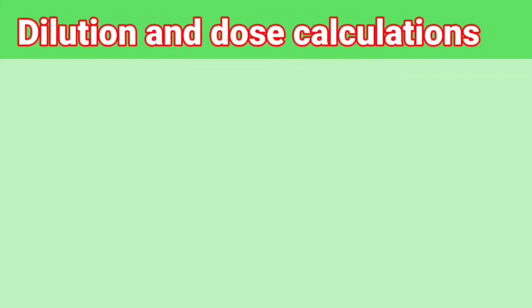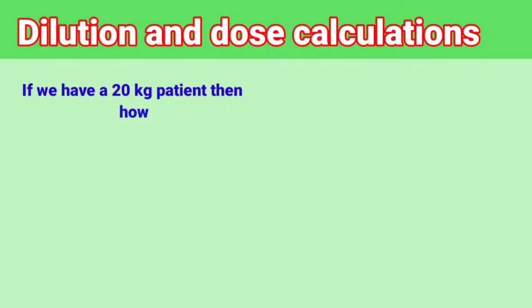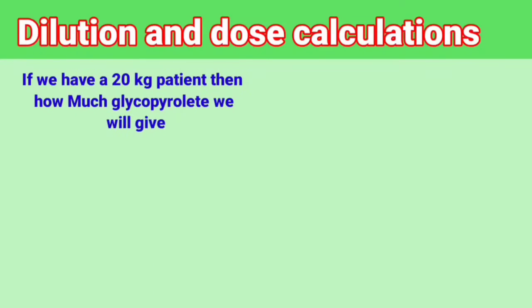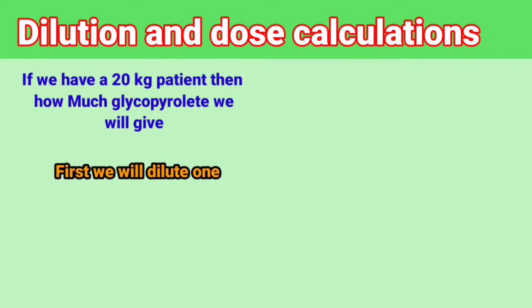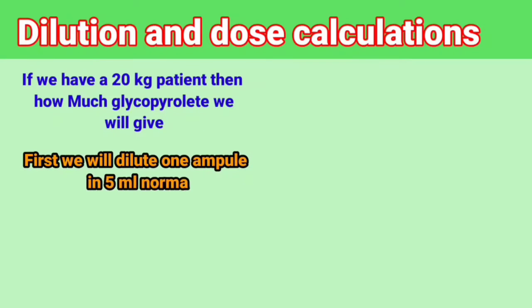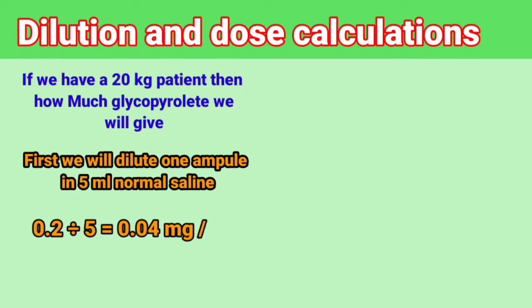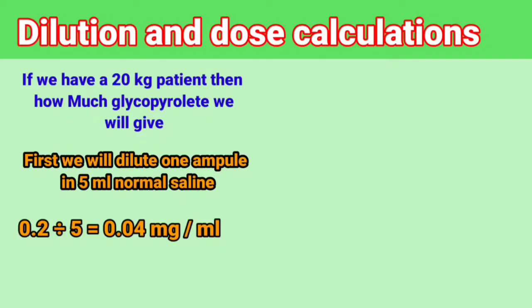Dilution and Dose Calculations: If we have a 20 kg patient, how much glycopyrrolate will we give? First, we dilute 1 ampoule in 5 ml normal saline. The diluted solution becomes 0.2 divided by 5, which equals 0.04 mg per ml.